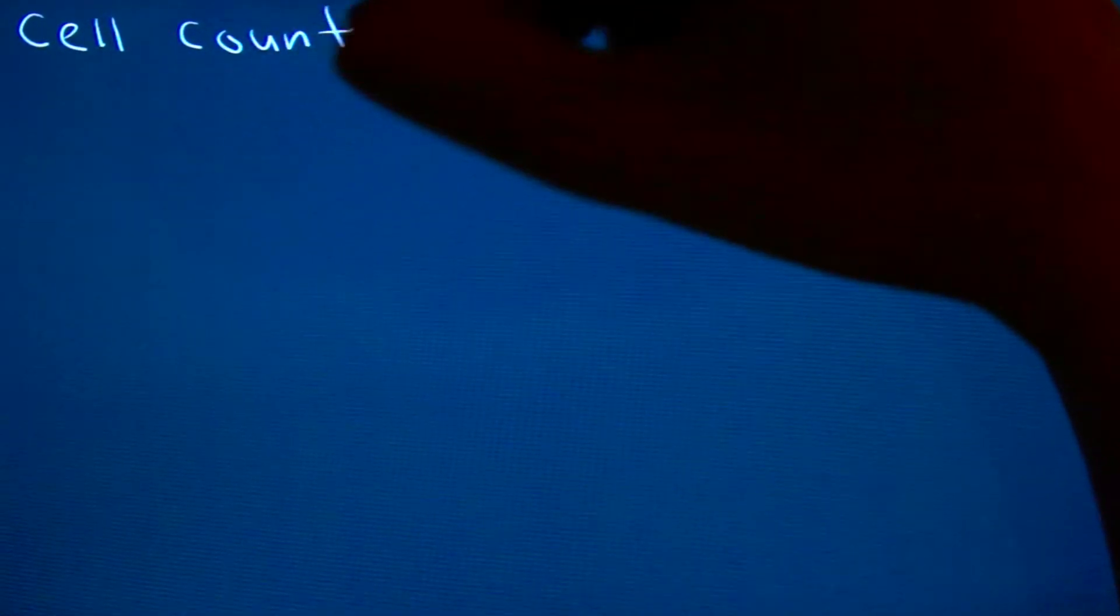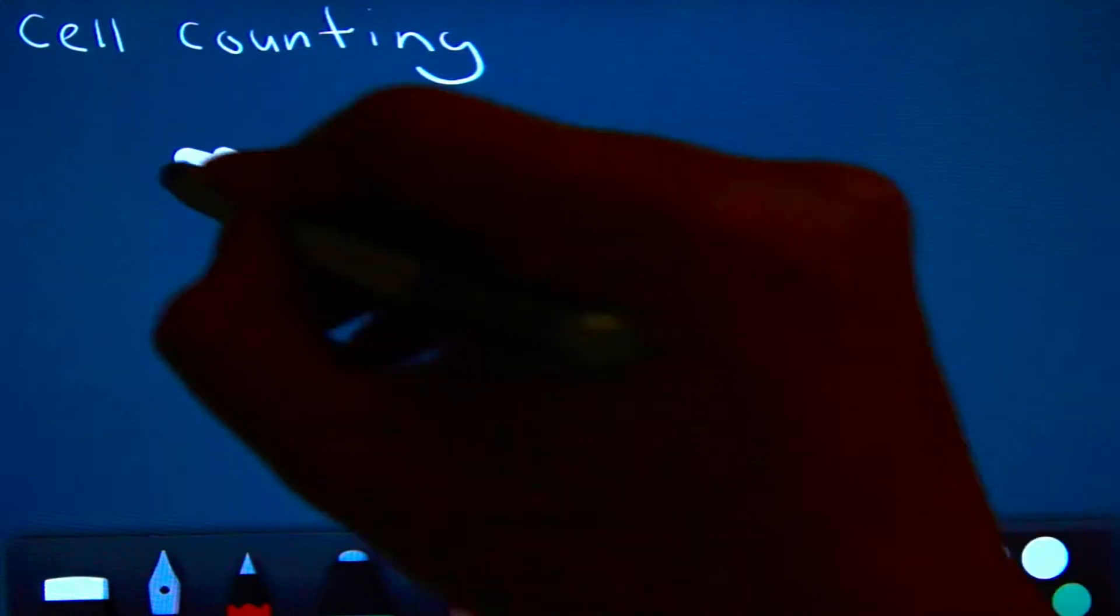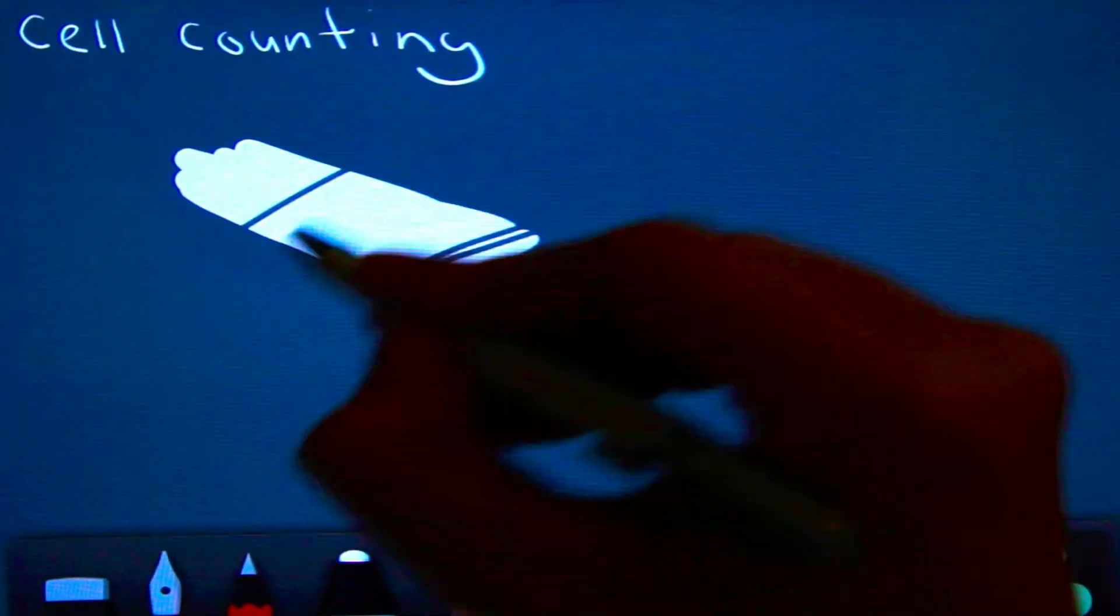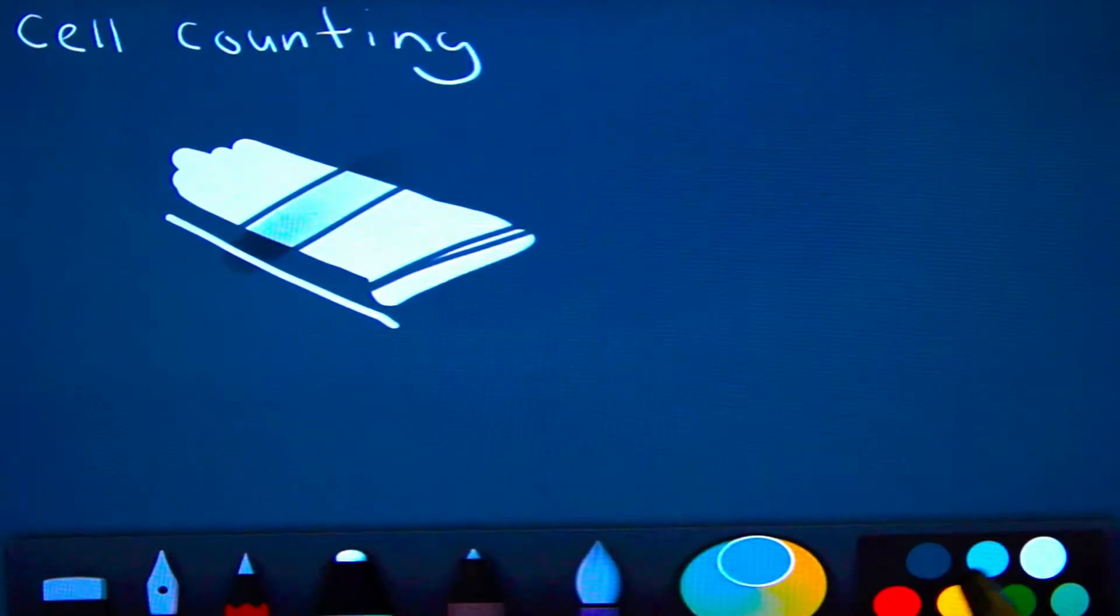Cell counting is a technique that is important in many procedures in biology and medicine. The hemocytometer is one such device that is used to count cells.